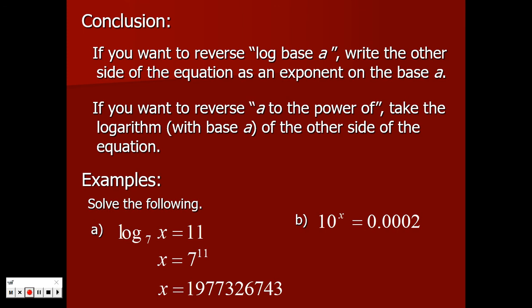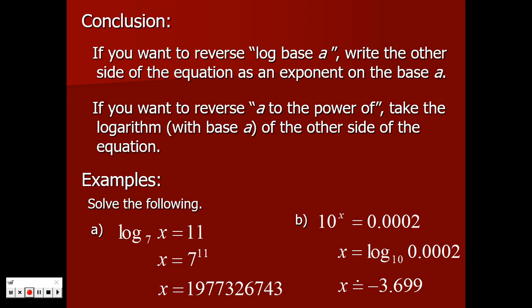Special case B: 10 to the power of x equals 0.0002. In previous sections we might have taken logs of both sides. But now we have a new way of thinking: 10 to the power of, when you move it over, becomes log base 10. Log base 10 is the button everybody has on their calculator — it's so common we just call it plain log. When you type it in, you get a weird answer of negative 3.699, meaning you need a negative exponent on 10 to produce that small number.